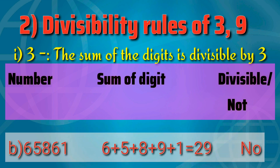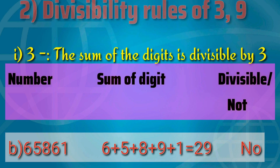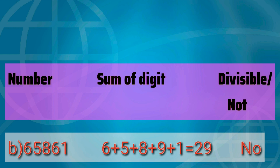A second example is 65,861. The sum of all digits is 6+5=11, 11+8=19, 19+6=25, 25+1=26. Wait — 6+5=11, +8=19, +6=25, +1=26. 29 does not come in the table of 3, so the number is not divisible by 3.